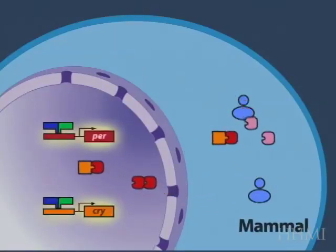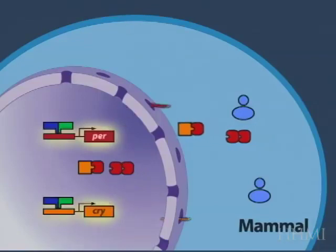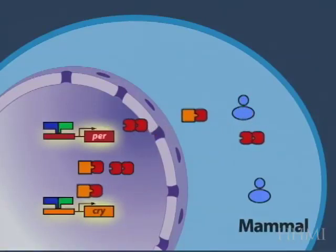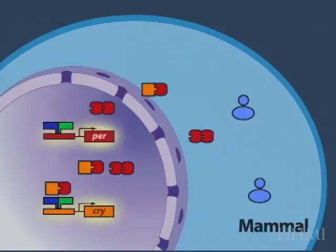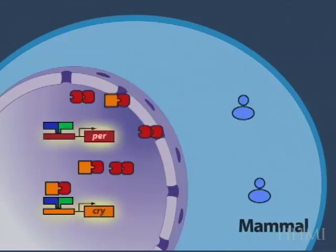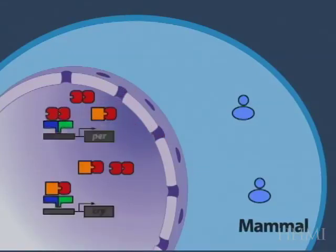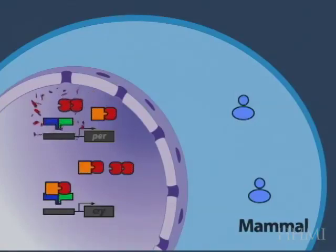Proteins are made, and in this case a number of different dimer combinations can be formed: PER-PER dimers, cryptochrome-PER dimers, and different combinations of the various PER and cryptochrome proteins. They then translocate into the nucleus where they interact directly with CLOCK and BMAL to then turn off the period and cryptochrome genes.